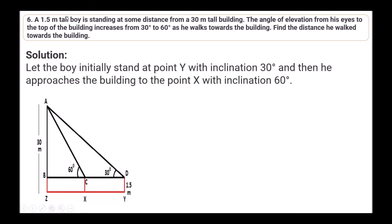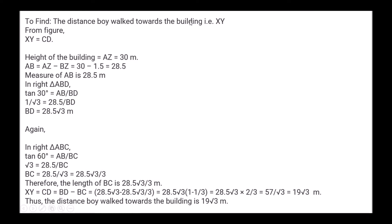Question 6: A 1.5-meter tall boy stands at some distance from a 30-meter tall building. The angle of elevation from his eyes to the top of the building increases from 30° to 60° as he walks towards the building. Find the distance he walked. Let the boy initially stand at point Y (30° inclination) and approach to point X (60° inclination). Height AB = AZ − BZ = 30 − 1.5 = 28.5 meters.